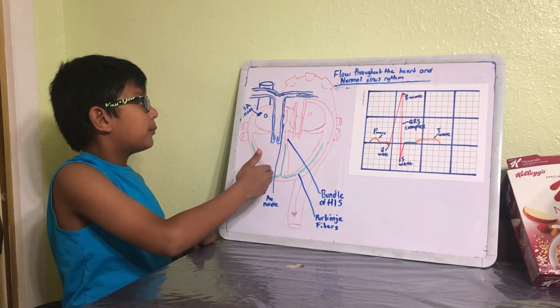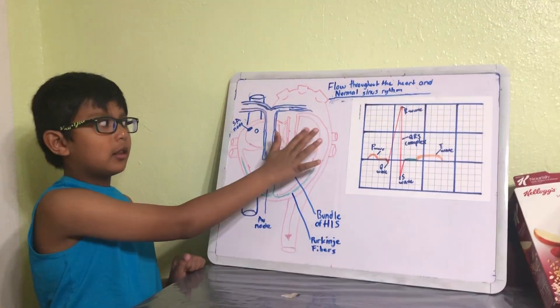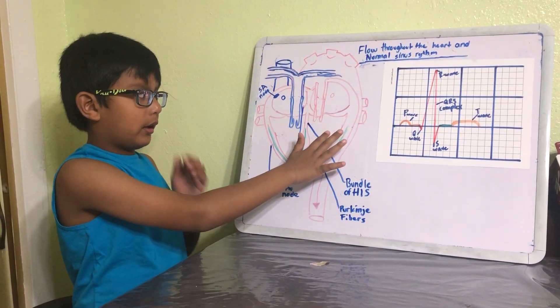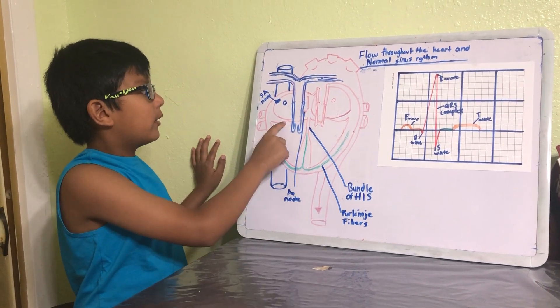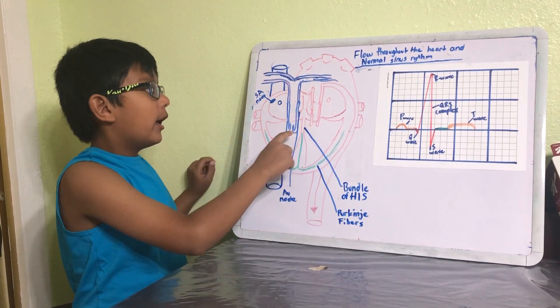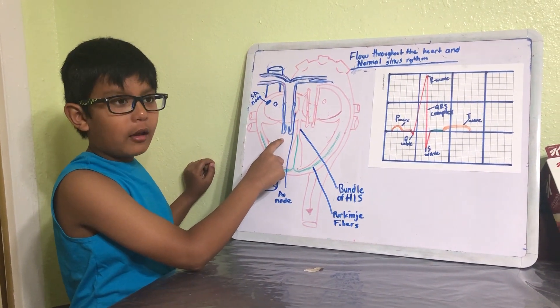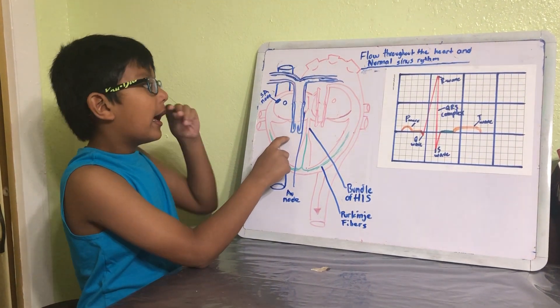We have the basics: this is the septum, this is the right atrium, this is the right ventricle, this is the left atrium, and this is the left ventricle. Now we also know that this is a tricuspid valve, this is the mitral valve.